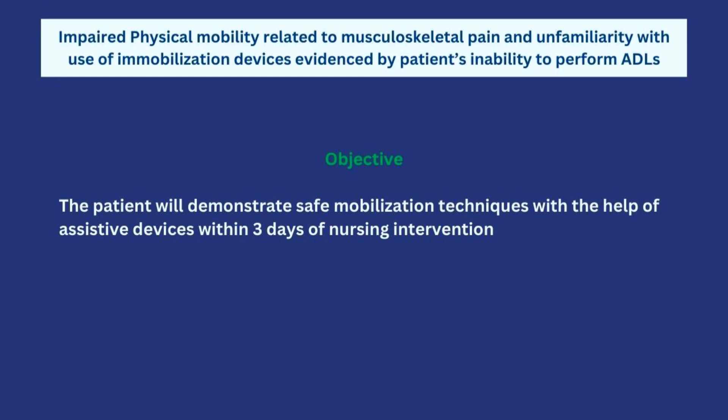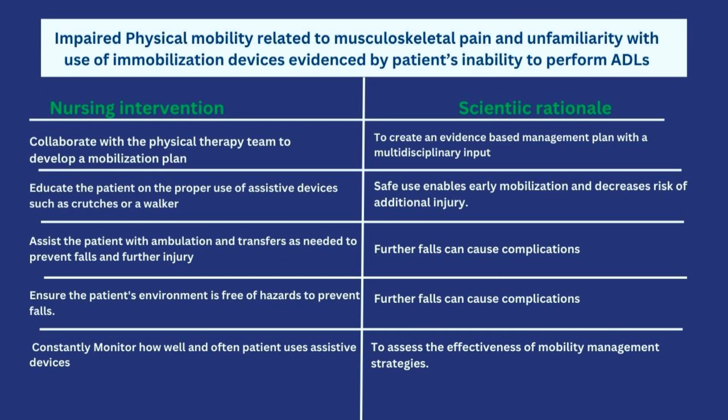The first intervention for impaired mobility is to collaborate with the physical therapy team to develop a mobilization plan. Physiotherapists are specialists in helping patients develop mobilization plans, so obtaining a referral and collaborating with them is essential. The scientific rationale is to create an evidence-based management plan with multidisciplinary input — the nurse, physiotherapist, and physician all contribute to the mobilization plan.